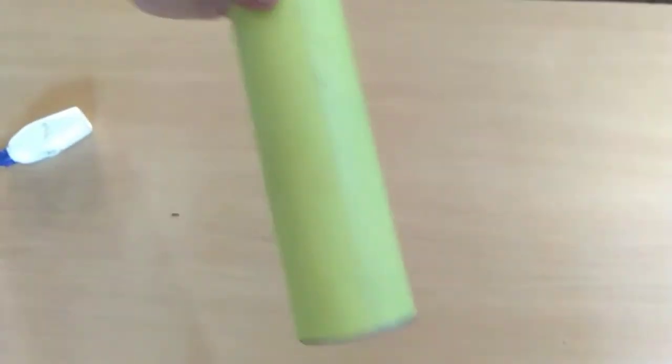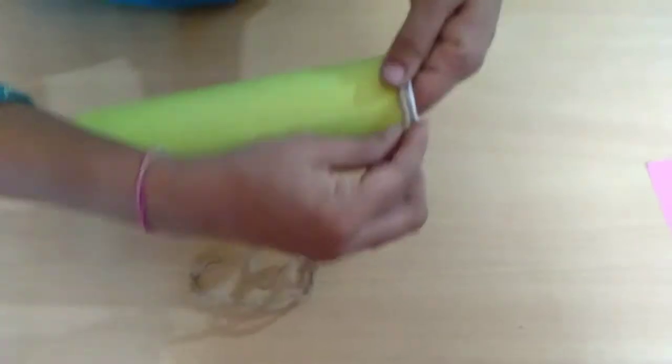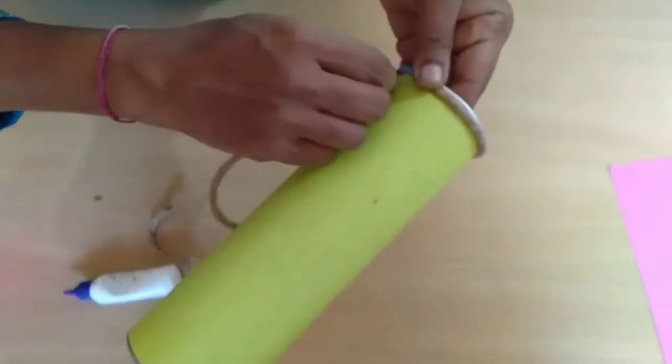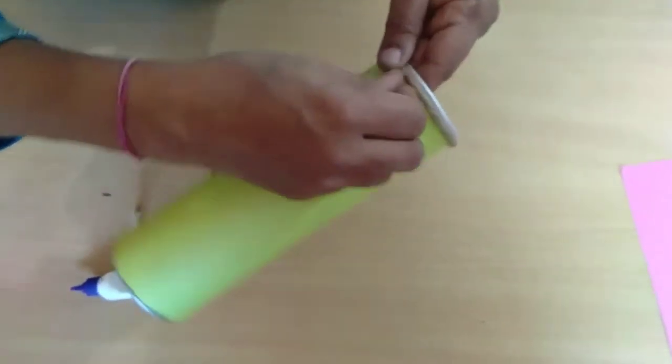It is already dried. And now this is jute. You have to roll the jute on the bottle. Now roll it.